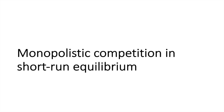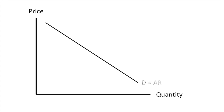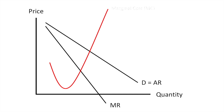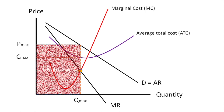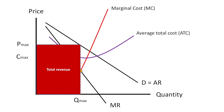Here's what that would look like in the short run. We lay out demand and marginal revenue as before, but something unique happens here. The profit maximizing level of output, Q star, results in a price that is higher than the average costs at this point. The result is total revenue which is greater than total costs, allowing the firm to earn supernormal profits.